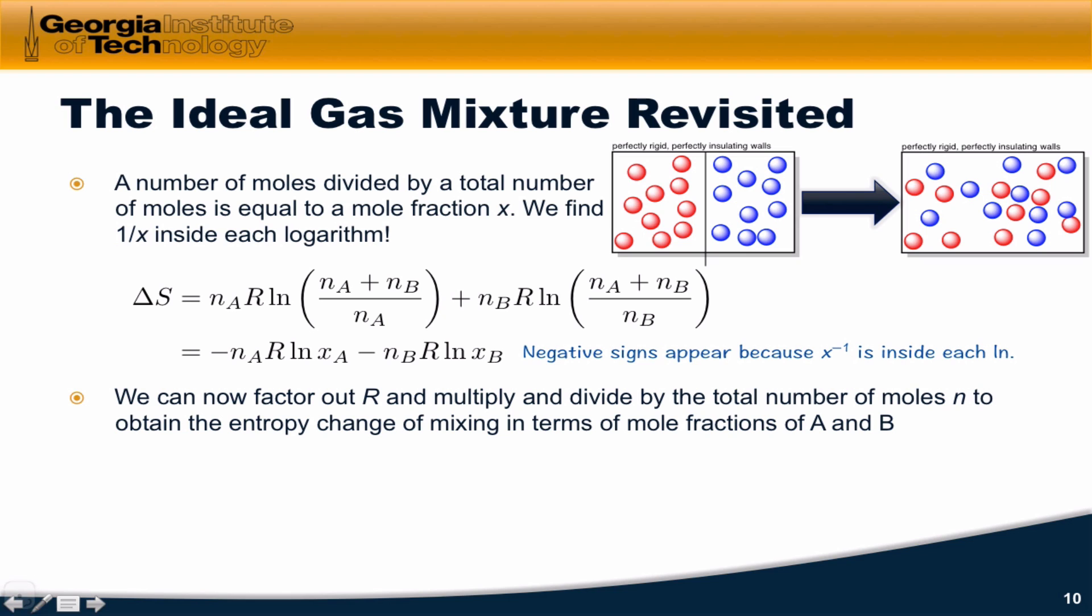Now let's factor out the gas constant and multiply and divide by the total number of moles. When we do this, when we divide by the total number of moles, let's call it little n without a subscript, we're getting a mole fraction out in front of each term. To make sure that this is still equal to delta S, we need to multiply the entire thing by the total number of moles. And so here we can write X sub A, here we can write X sub B, and the overall expression becomes negative N, that's the total number of moles, times the gas constant times X sub A natural log of X sub A plus X sub B natural log of X sub B is equal to the total change in entropy delta S.